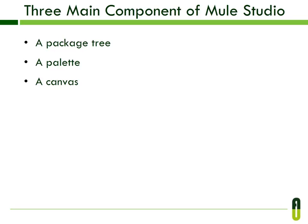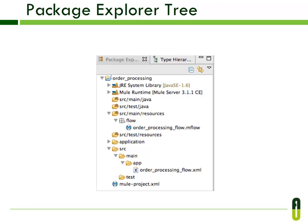The three main components of Mule Studio are: a package tree, a palette, and a canvas. First, we will discuss the package tree. The package tree contains the entire structure of your project, as seen in the Package Explorer tree.